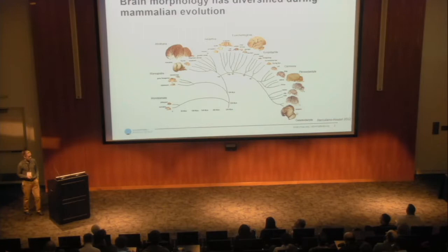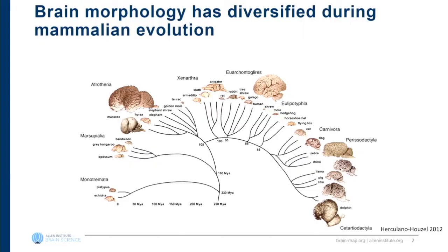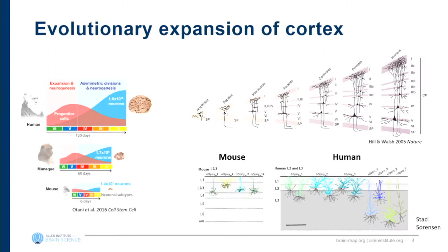Brain morphology has diversified dramatically across mammalian evolution. You saw this in vertebrates in Maria's talk, but in mammals as well there's a broad diversity — large brains have appeared in multiple clades across the tree, but it's not a universal feature. Certainly with these larger brains there is a larger cortex. Human cortex is about a thousand-fold larger than mouse cortex, driven by an extended neural development period, greater number of neural progenitors, and not just an expansion of cortical area but also cortical thickness.